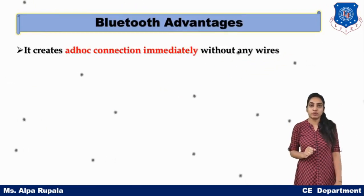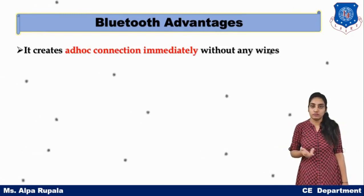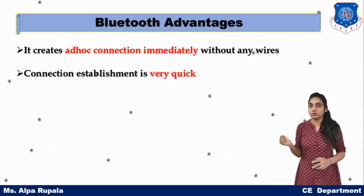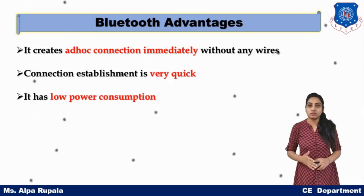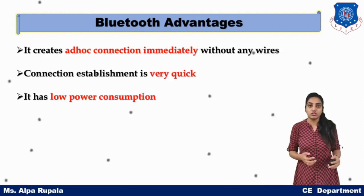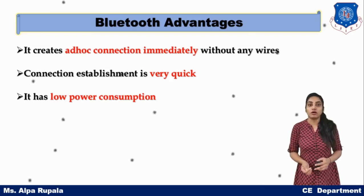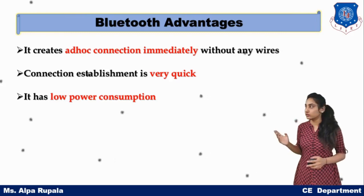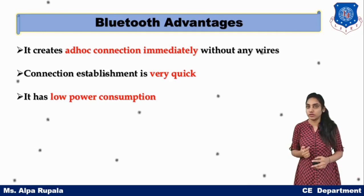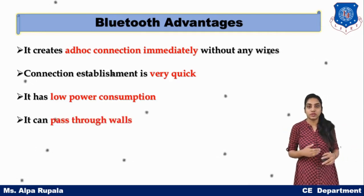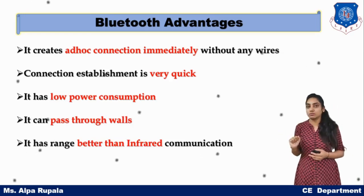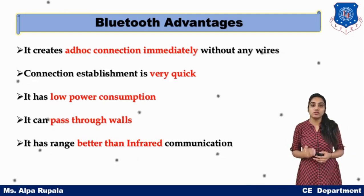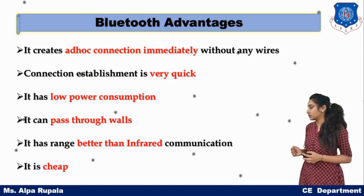The advantages of Bluetooth include: first, ad hoc communication is very quick to establish. Second, it consumes low power, which is important since mobile network devices must be lightweight and draw minimum power. Third, communication can pass through walls, so we don't need to make holes in walls. Fourth, it has better performance and range than infrared rays.